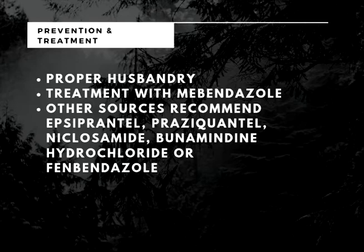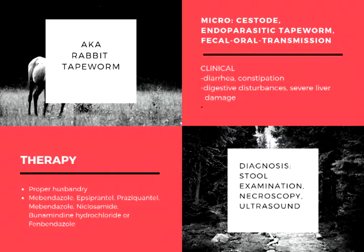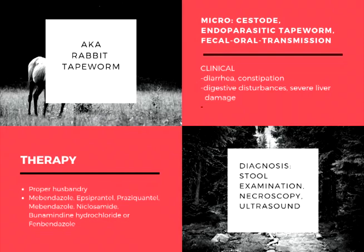In conclusion, T. pisiformis is an endoparasitic tapeworm also known as the rabbit tapeworm, and it is a species of cestode. Adult T. pisiformis can grow between 0.5 to 2 meters long. Its clinical signs are asymptomatic, but in canids there is the possibility of diarrhea or constipation, while in rabbits they can have digestive disturbances and severe liver damage that can lead to death. Diagnosis is through necropsy, radiography, ultrasound, and stool examination. It can be prevented via proper husbandry and treated with mebendazole, epsiprantel, praziquantel, niclosamide, bunamidine hydrochloride, or fenbendazole.